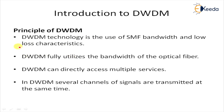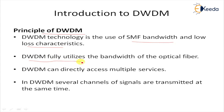Some key principles of DWDM: the technology uses SMF (Single Mode Fiber) bandwidth and low-loss characteristics. The use of multiple wavelengths as carriers allows multiple channels in the fiber at the same time. Compared with common signal systems, DWDM fully utilizes the bandwidth of the optical fiber.